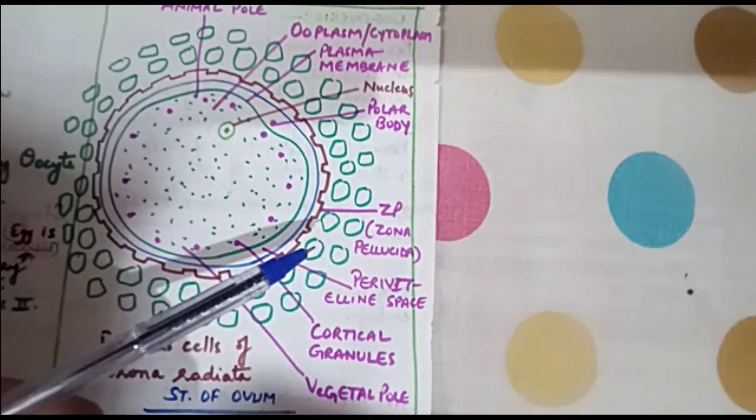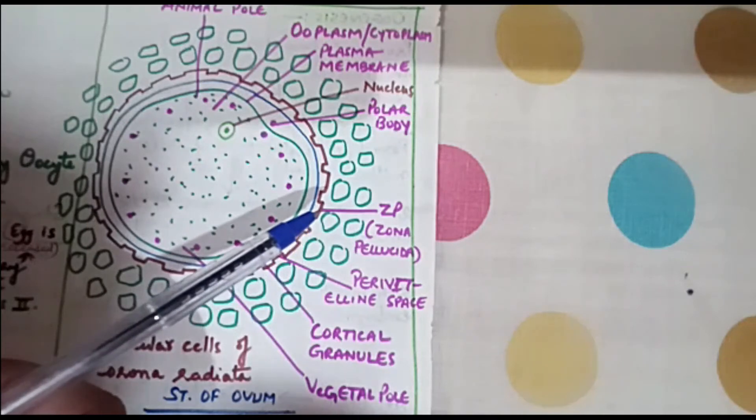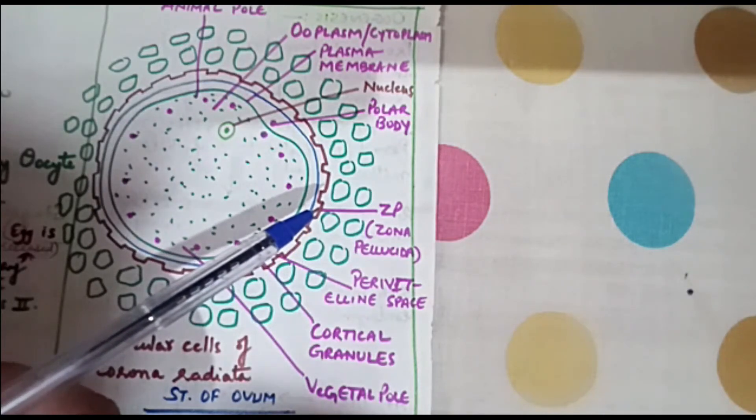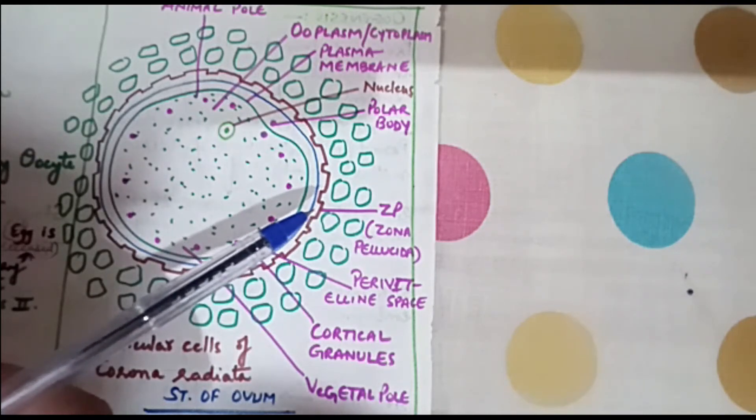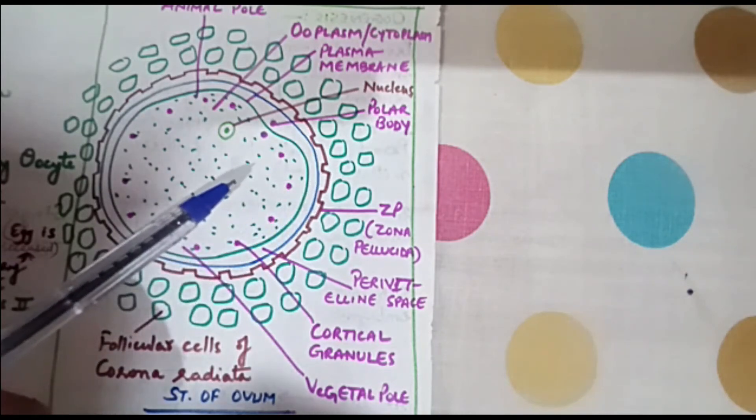Just inner to these corona radiata cells there is a layer which is known by the name of ZP or zona pellucida. Zona pellucida functions in a way that it blocks the entry of multiple sperms inside the cytoplasm of the egg.